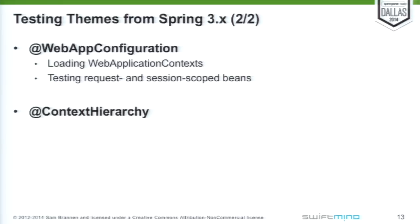Next up was support for context hierarchies. If you're familiar with Spring MVC, you know that you normally have a root web application context at the top and then an application context for your dispatcher servlet at the bottom — the same would be true if you're using Spring Web Services for SOAP. In 3.2.2 specifically, we added support for configuring contexts in a hierarchy for your integration test so that it models the same configuration and constellation you'd have in your production deployments. This works nicely to test web layers or maybe Spring Batch if you have jobs loaded in child contexts.